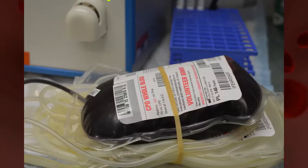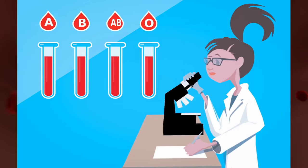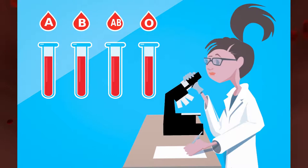Like with whole blood transfusions, there is a degree of cross-matching, and there is also often a targeted recipient — often someone who has been diagnosed with one or more conditions such as congenital or acquired clotting disorders, liver disease, severe hemorrhage, or deficiencies in specific clotting factors, among others.